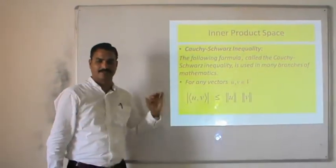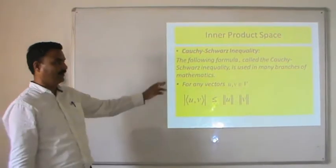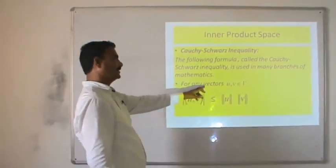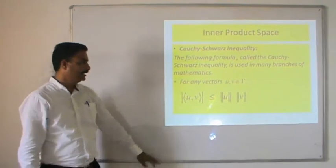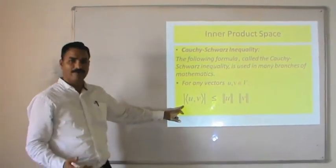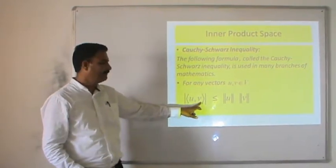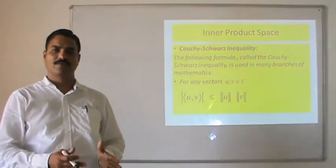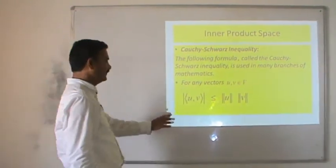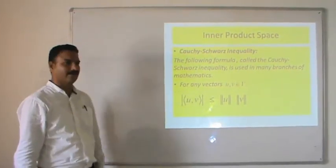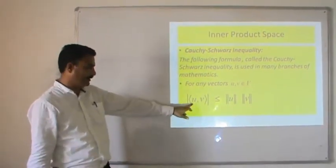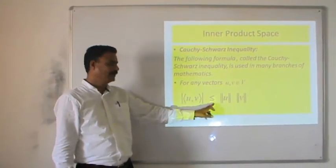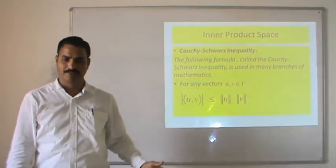This is the very important inequality known as the Cauchy-Schwarz inequality. For any vectors u and v belonging to the vector space, the absolute value of the inner product |⟨u, v⟩| remains less than or equal to the product of their individual norms: ‖u‖·‖v‖. This is the well-known Cauchy-Schwarz inequality.